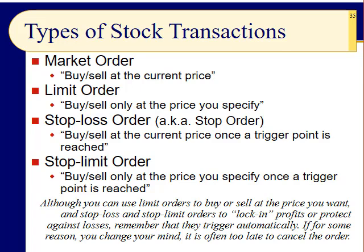With a market order, whatever the market price is, you're going to get it — you're either going to sell or you're going to buy. When we look at internet sites that show quotes, we're seeing the price from 15 to 20 minutes ago. If you want the exact quote, you either have to pay extra or go to your broker. Some brokerage firms will let you do it online and see the real-time price.